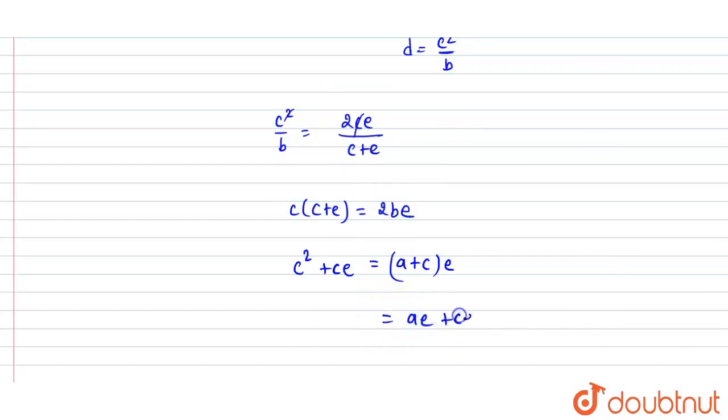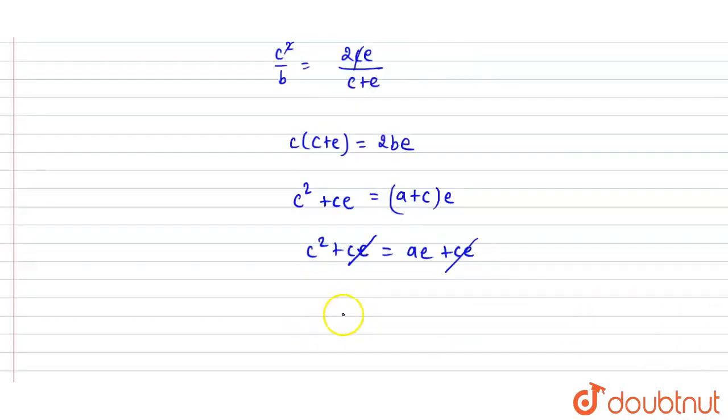So, this will be AE plus CE. And here C² plus CE. So CE is gone. So, here it is what happened. C² is equal to AE.